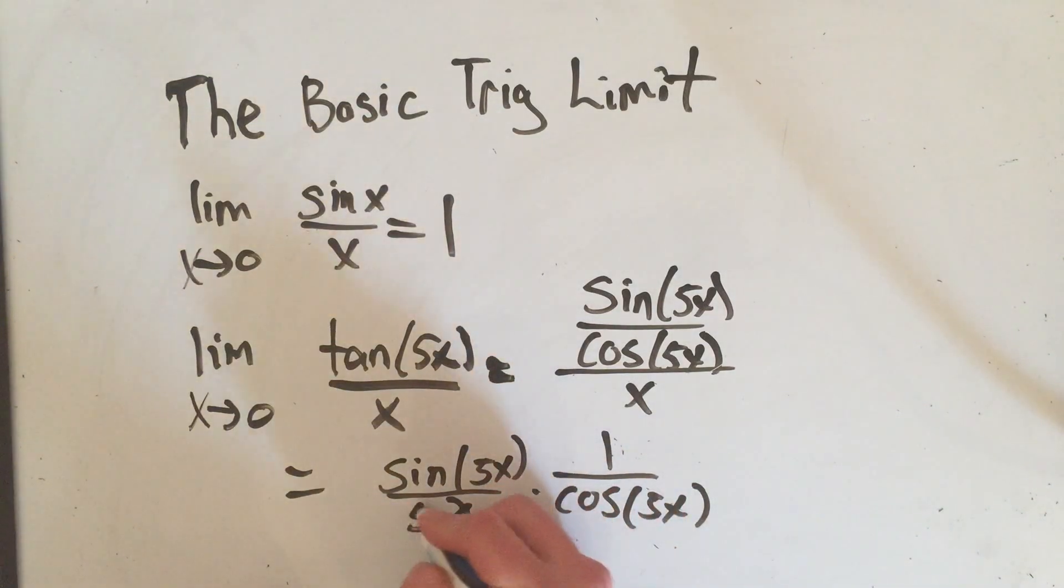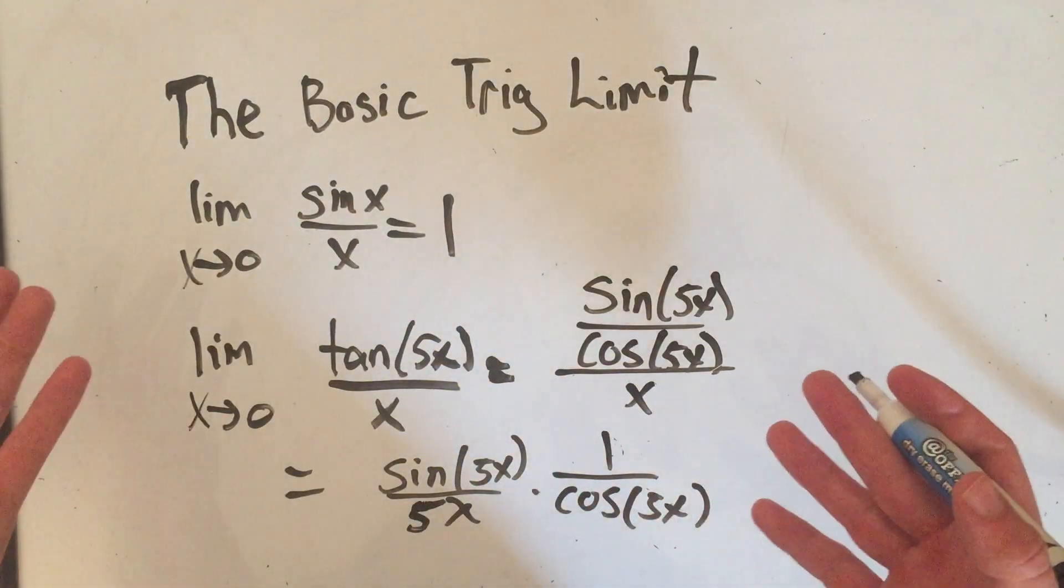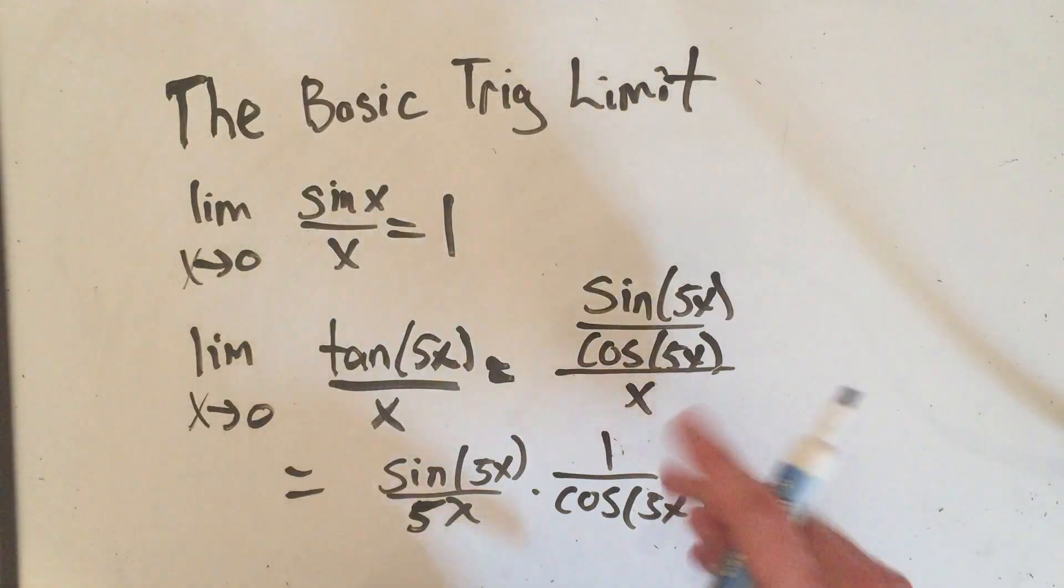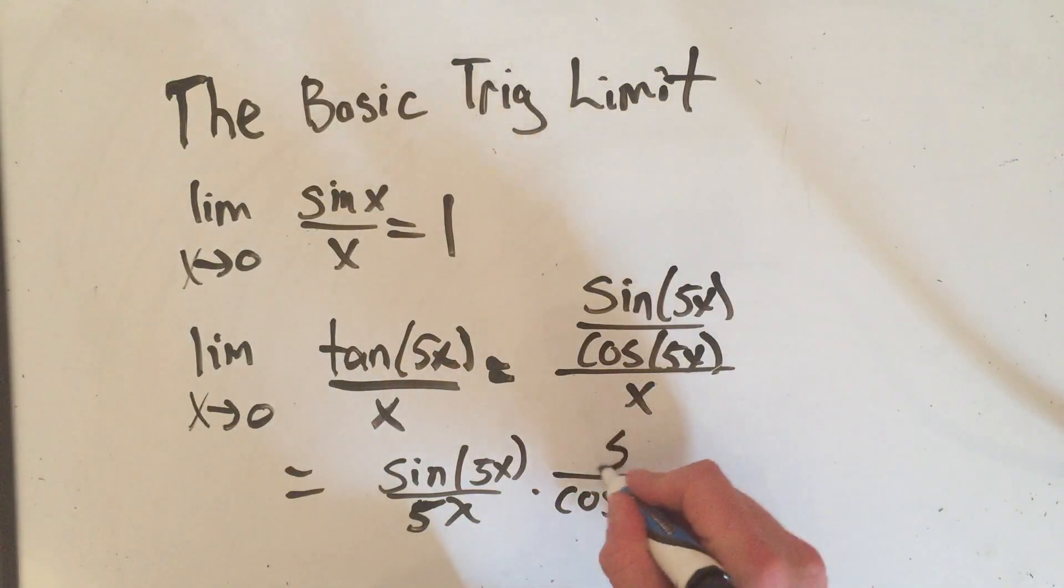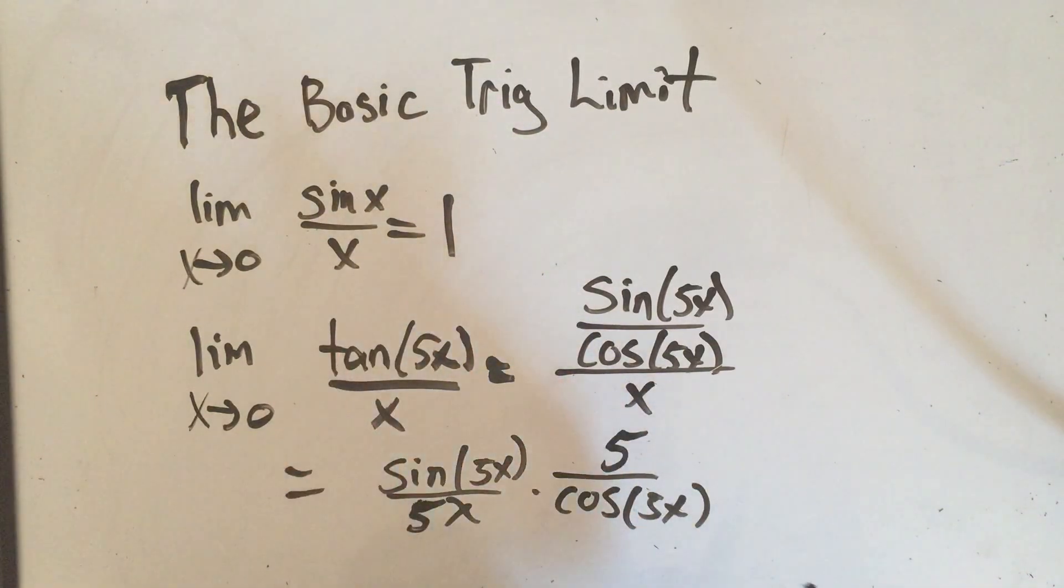I need to put a 5 here to make this identity work. But I'm not just allowed to divide by 5 right out of the blue. If I divide by 5 I also have to multiply by 5. So from here I could cancel these 5s and get back to where I started.